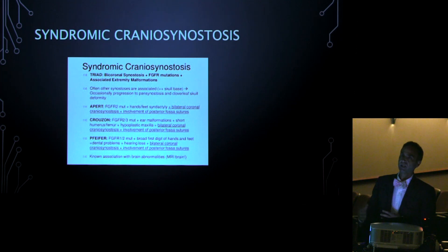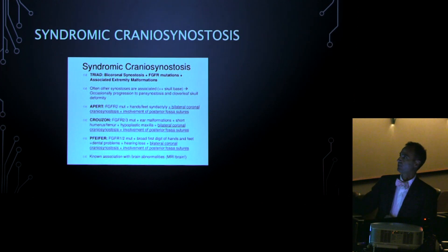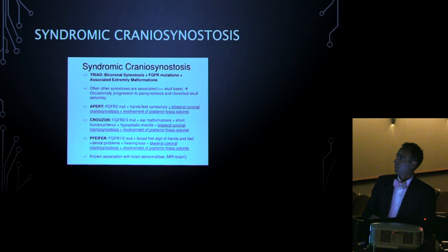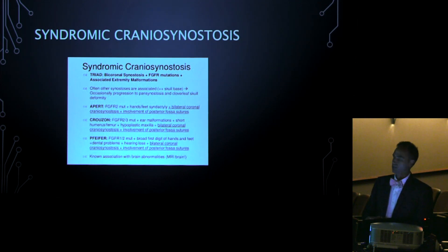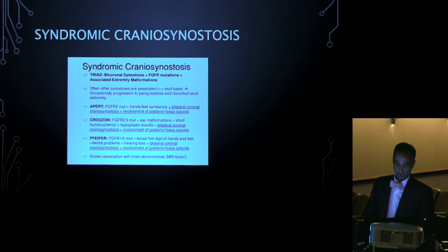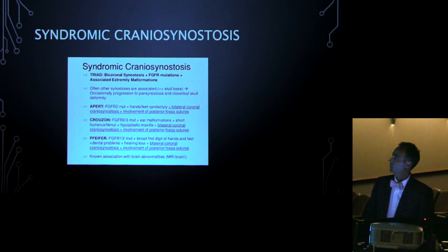There are syndromic forms of multisuture craniosynostosis — some common ones include Apert syndrome, Crouzon, and Pfeiffer's syndrome. These are fibroblast growth factor receptor mutations, specifically gain-of-function mutations, which cause the sutures to fuse. They are also associated with mid-face issues and some extremity issues.